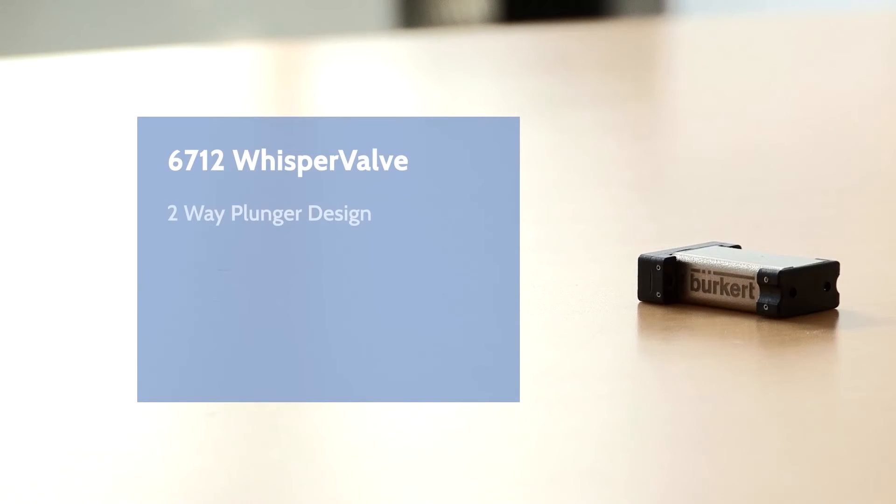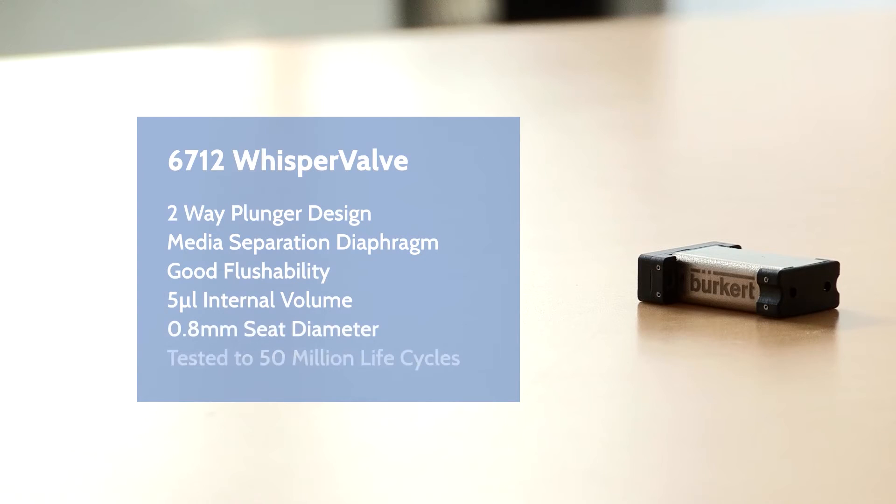The 67th valve is a plunger type with media separation. This design is perfect for good flushability and less internal volume.